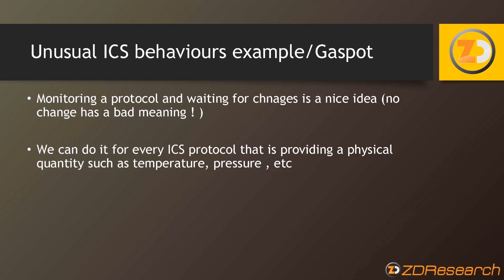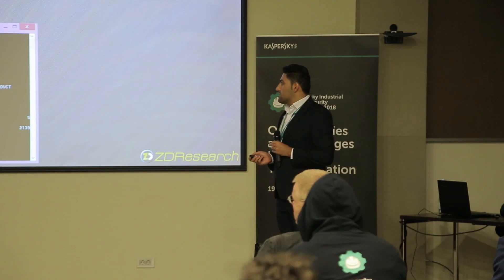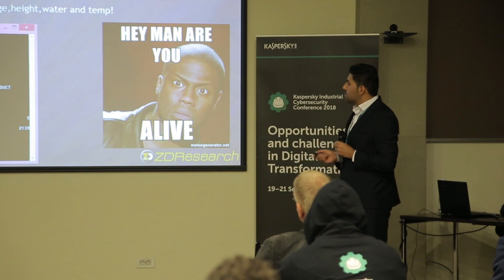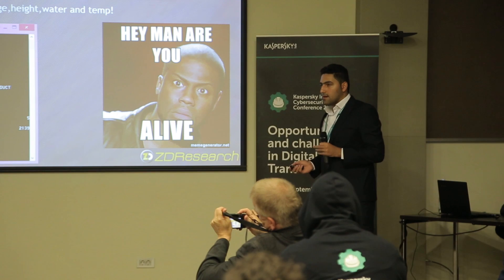For detecting unusual ICS behaviors, it is enough to monitor the protocol and observe its behavior. This example is from Gaspot. When you send the I-21-Hot command, it responds with certain data. Thirteen hours later, sending another request yields the same result — the values show no change and are fixed numbers, indicating a honeypot.